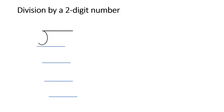Let us perform division on a large number. First, I will take the question 51,958 divided by 23. We write this in the long division form. There are two options: make a table of 23 in a rough column, or use estimation. I am going with estimation. For 23, the nearby round number is 20. Ask: how many 20s fit in 51? 2×20=40 and 3×20=60, which is greater than 51. So two 20s fit, meaning 23×2=46.